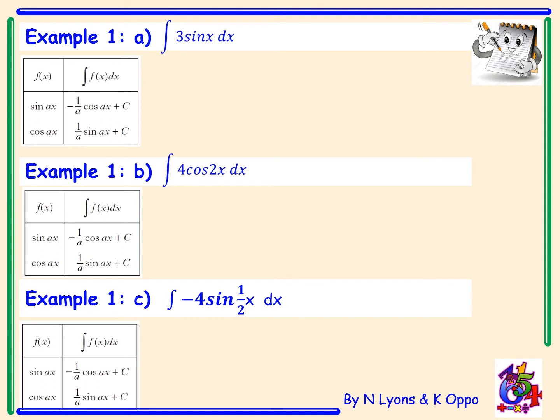Example 1a. Here we have the integral of 3 sin x. We're going to use the first rule in our table. The number 3 in front of sin x just gets copied down, and sin x integrates to negative cos x plus c. There is no a term here, so the final answer is negative 3 cos x plus c.